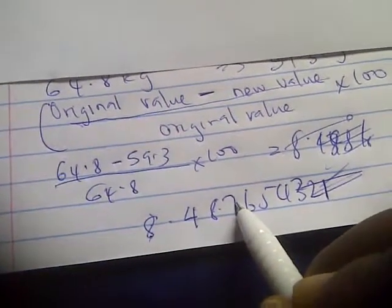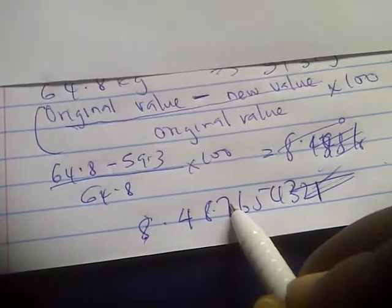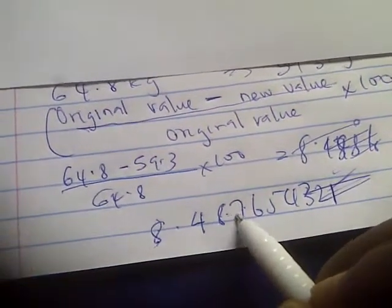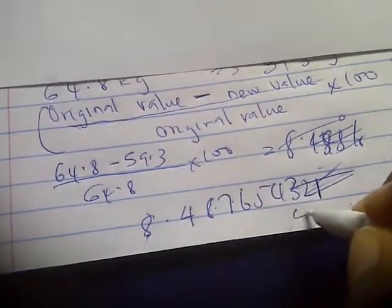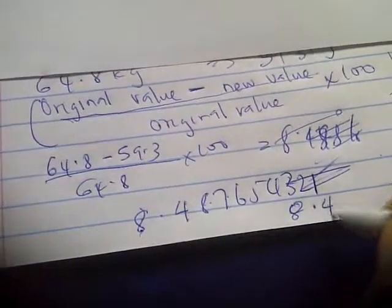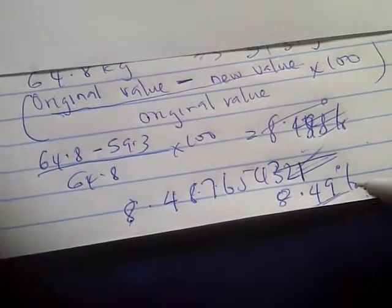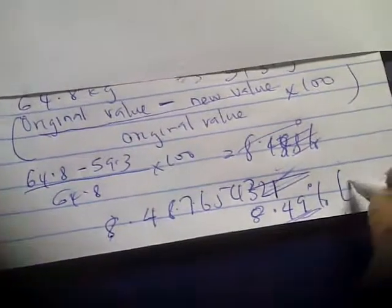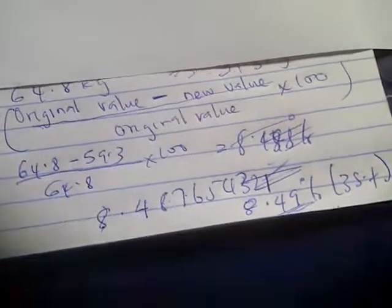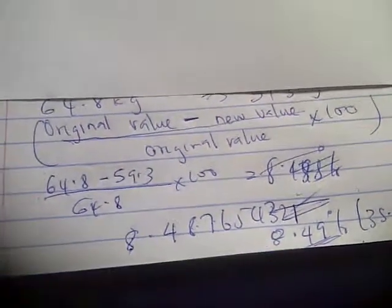Since the next value is more than 5, you're going to add one to this and every other thing becomes 0. So it's going to be 8.49% correct to three significant figures. That's basically how you solve it.